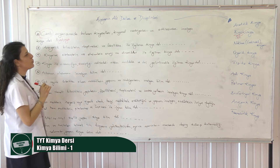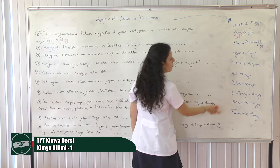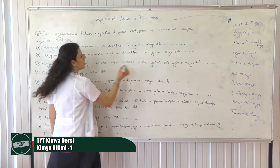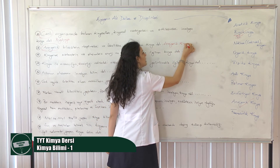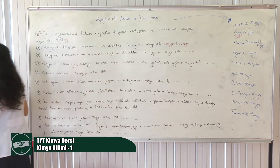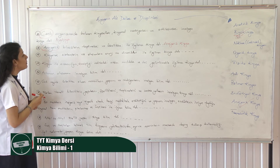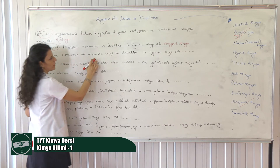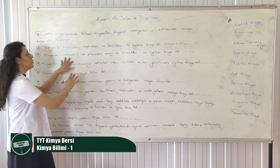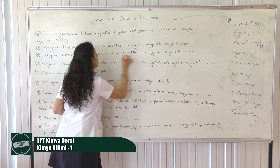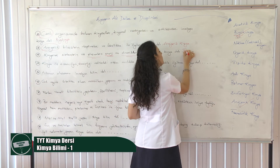Anorganik bileşiklerin tepkimeleri ve özellikleri — adı üzerinde anorganik demiş, o zaman anorganik kimya var. Anorganik kimyayı aldık, yerine yazdık. Bunu şu şekilde de ifade edebilir: karbon-hidrojen bağı içermeyen kimyasal reaksiyonlara bakılarak. Diğeri kimyasal sistemlerin oluşumlarını, enerji ve dinamiklerini inceleyen kimya dalı — sistem, oluşum, enerji, dinamik demiş. Bunların hepsi bize fiziği anlatır. O yüzden fizikokimya deriz.